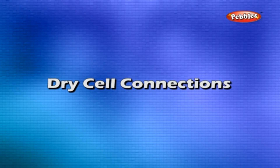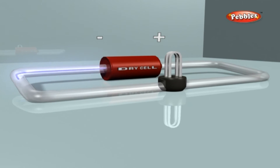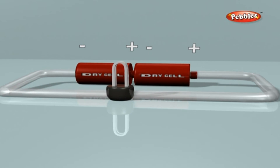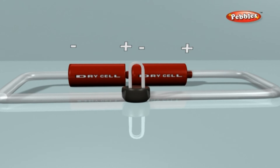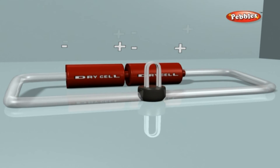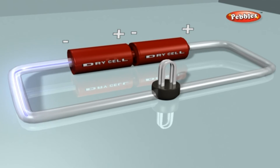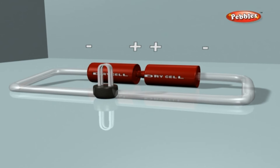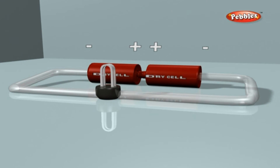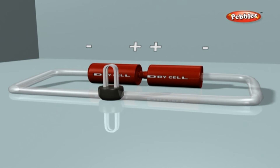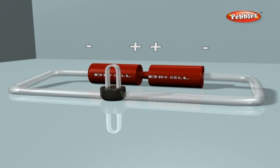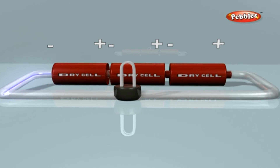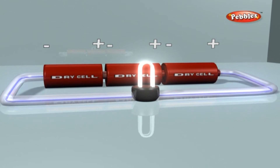Dry cell connections: Connect a torch bulb across a dry cell and observe the brightness of the bulb. Now take two dry cells and arrange them such that the negative electrode of one touches the positive electrode of the other. Connect the same torch bulb — the bulb glows more brightly. If two cells are arranged so that the positive electrode of one touches the positive electrode of the other, the bulb does not glow at all. A group of two or more cells, when connected together with correct polarities, is called a battery.